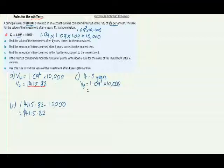If we find V3, that'll give us the value of the account after three years. We've already found the value after four years, so that's why I'm doing it this way. So plug in 1.09 to the power of three times 10,000.